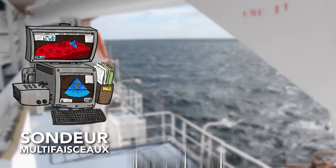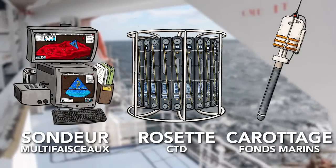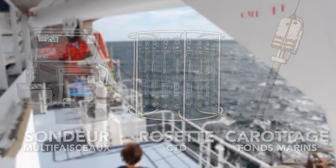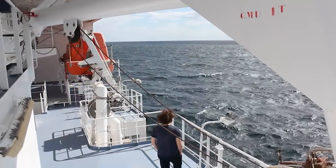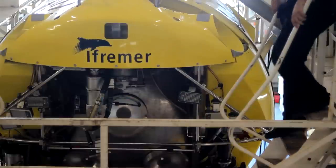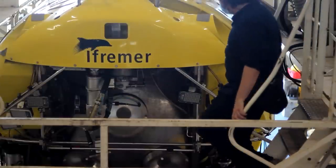Sondeurs multifaisseaux, rosettes CTD, carottage, voici donc autant d'outils utilisés par les scientifiques pour suivre les traces du méthane en mer Noire. Toutefois, il existe un dernier moyen d'approcher nos émanations de gaz, et pour ce faire, nous allons avoir besoin de l'aide d'un véritable monument historique, le Nautil.